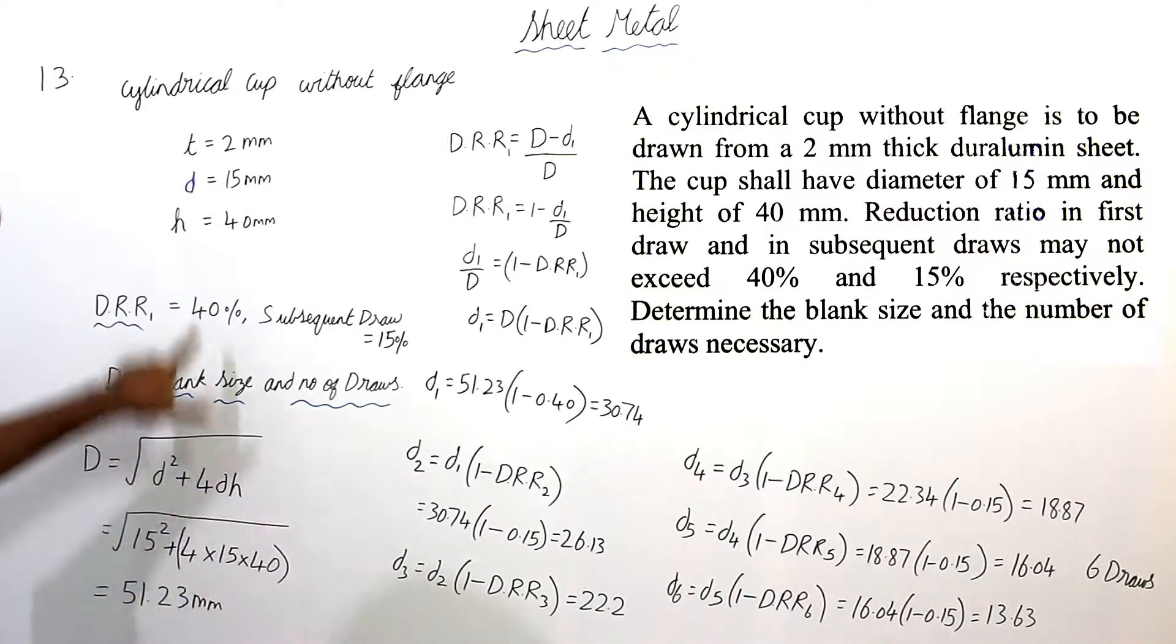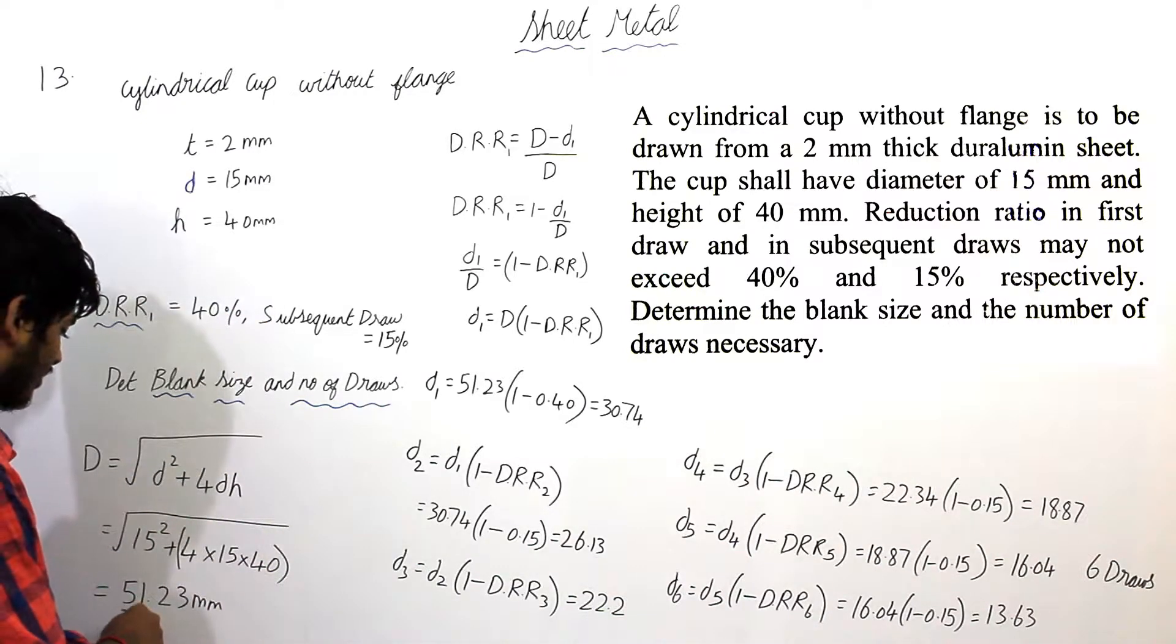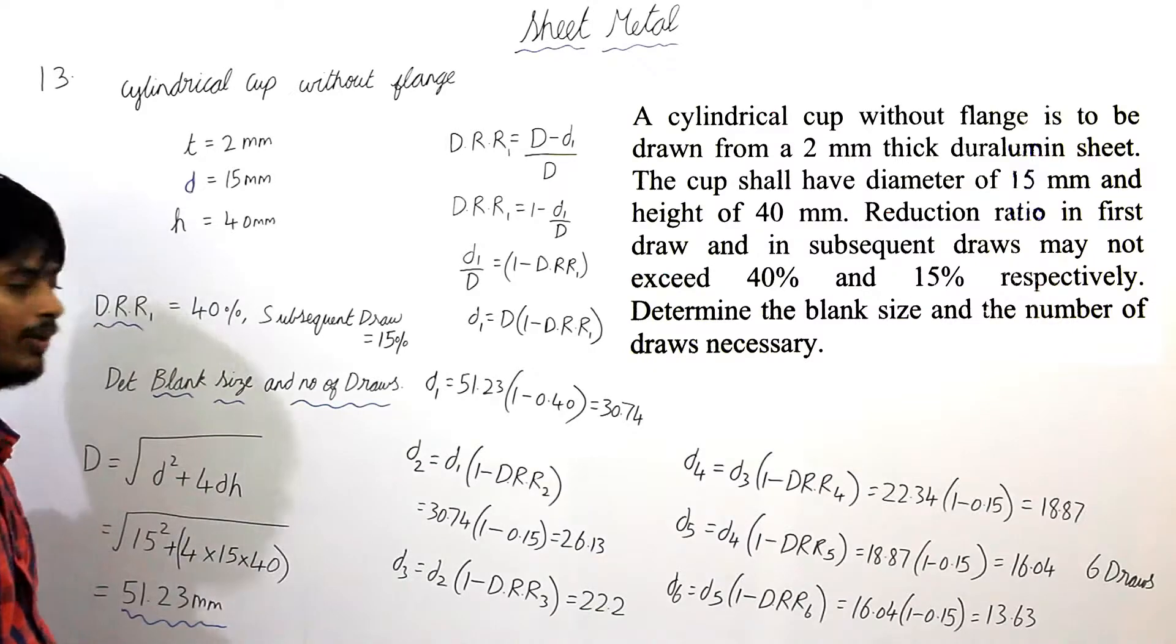So 15 square plus 4 into 15 into H is 40. I am getting the blank size, the blank diameter is 51.23 mm.